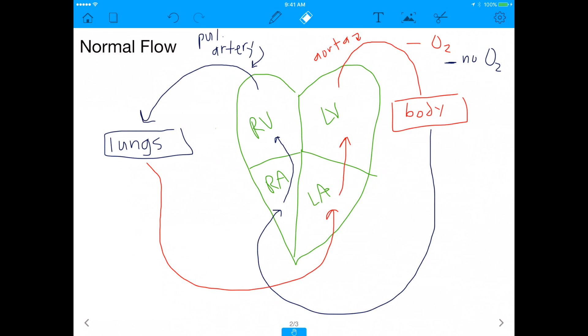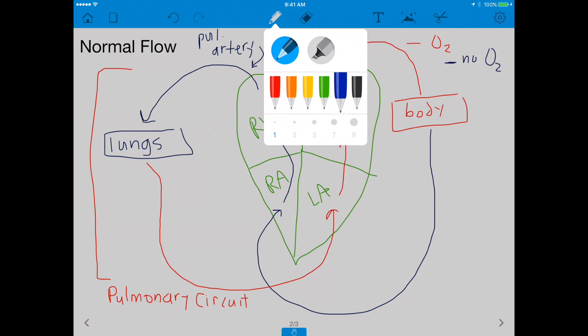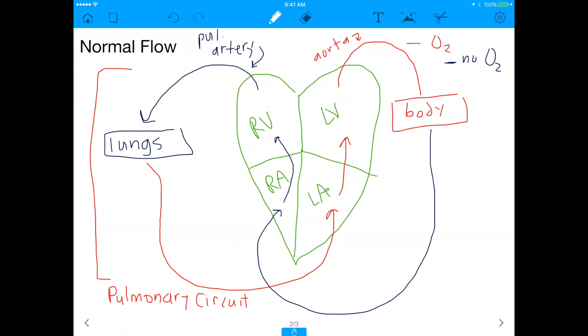And so this left side of the circuit that you're seeing, this left side that's going to the lungs, that's called the pulmonary circuit. And this right side that you're seeing, this right side is called the systemic circuit. So I just want you to see that this is what's normally happening in the heart.